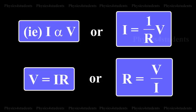That is, I directly proportional to V, or I is equal to 1 by R into V. That is, V is equal to I into R, or R is equal to V by I.